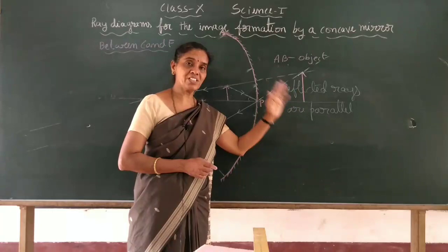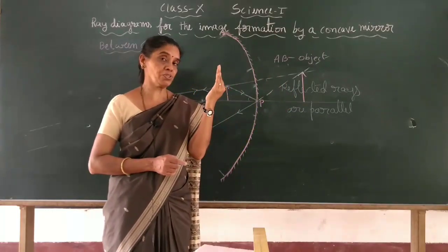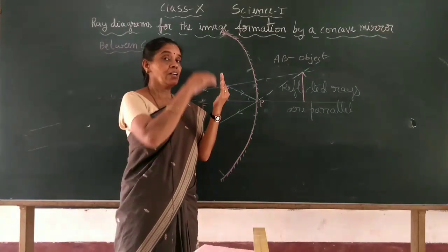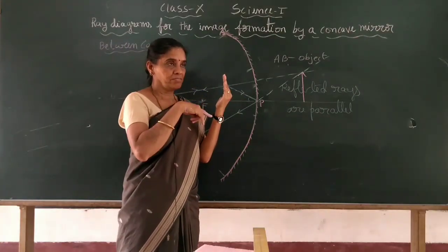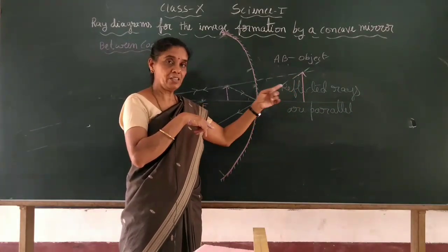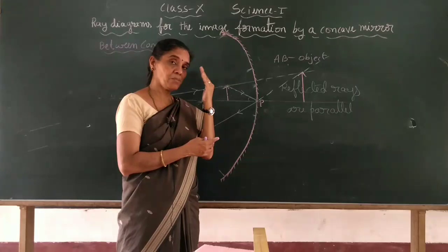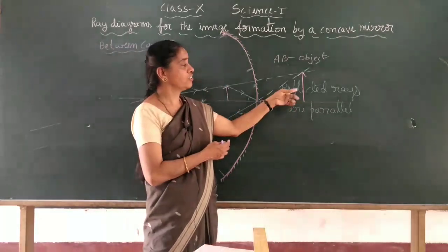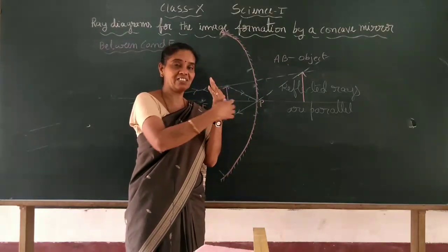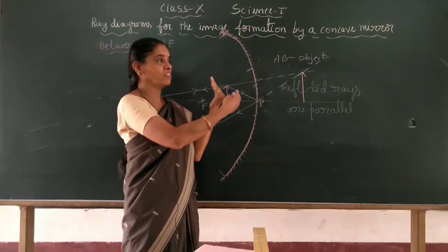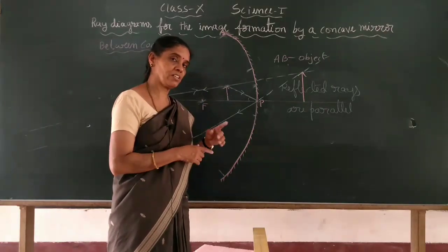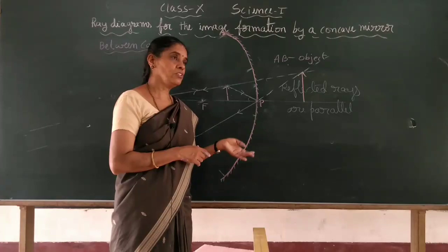If you use a concave mirror close to your face — like a shaving mirror — you will see your face upright and larger in size, with the image appearing behind the mirror, just like an ordinary mirror. The image is erect and enlarged.